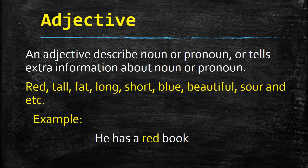Our third part of speech is adjective. An adjective describes a noun or pronoun, or tells extra information about a noun or pronoun. Adjective kisi bhi cheez ko enhance karne ke liye istamal hoga. For example: red, tall, fat, long, short, blue, beautiful, sore, etc. For example, 'He has a red book' — here book is a noun, but we use 'red' to describe it. Kisi bhi noun ya pronoun ko enhance karne ke liye jo quality words istamal hotay hain, unko hum adjective kehtay hain — he is very tall, he is very fat, she is very short, she has a blue dress, she is very beautiful. Jo bhi cheez noun ko describe karegi in the form of any quality, that is called an adjective.